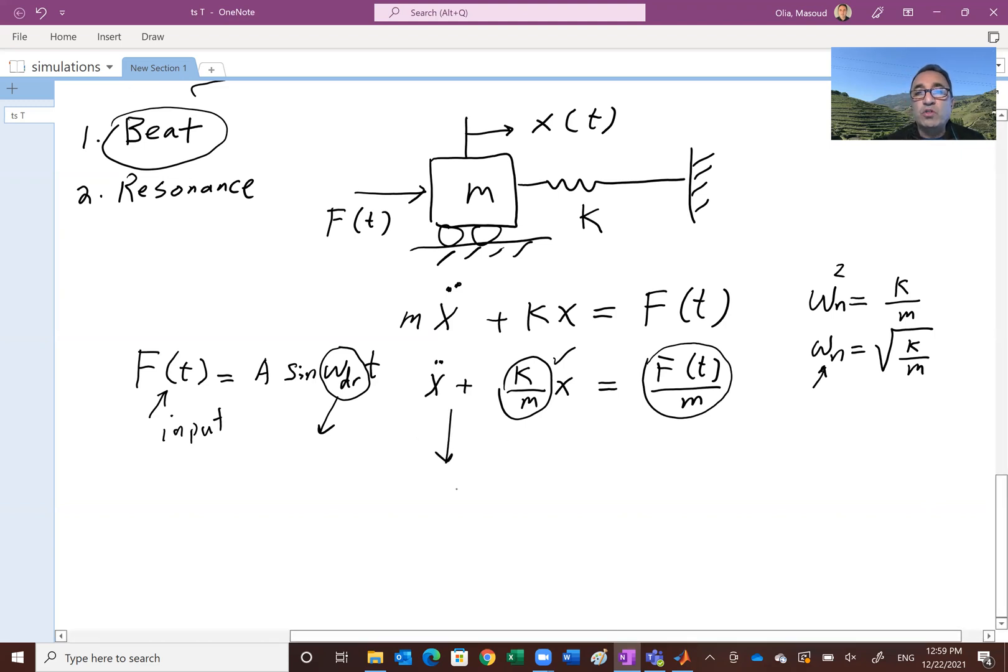So basically what happens, the solution to this becomes some amplitude. And you will have two sine waves of the sum of the driving frequency and the natural frequency divided by two, and then the difference of the driving frequency and the natural frequency divided by two. So you have one sine wave riding on top of another sine wave, and that creates a beat if these two frequencies, omega n and omega dr, are equal.